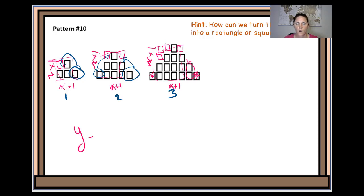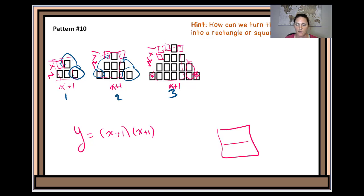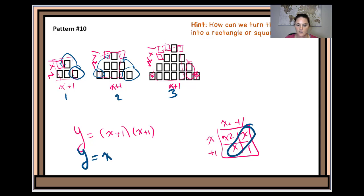For the rule, y is equal to (x + 1) times (x + 1), or we could write this as (x + 1) squared. Using the area model: x², x, x, and 1. Combining the like terms gives y equals x² plus 2x plus 1.